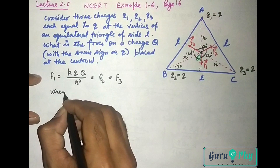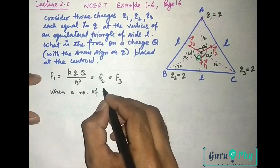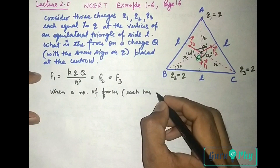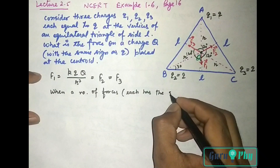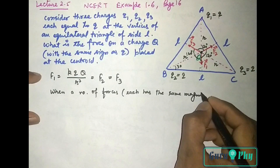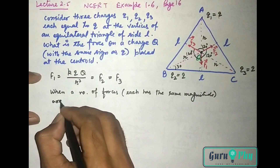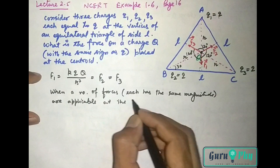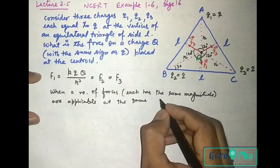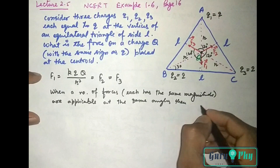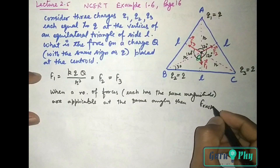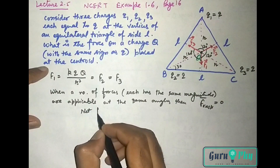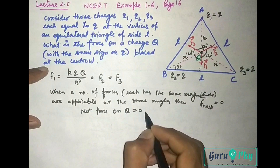That means, when a number of forces each having the same magnitude are applicable at the same angles, then their resultant is always equal to 0. So, net force on Q will be equal to 0.